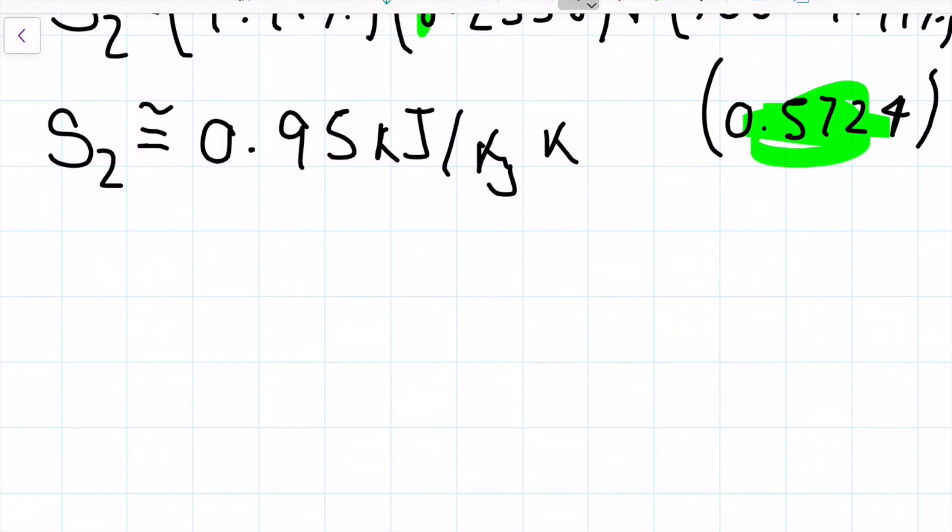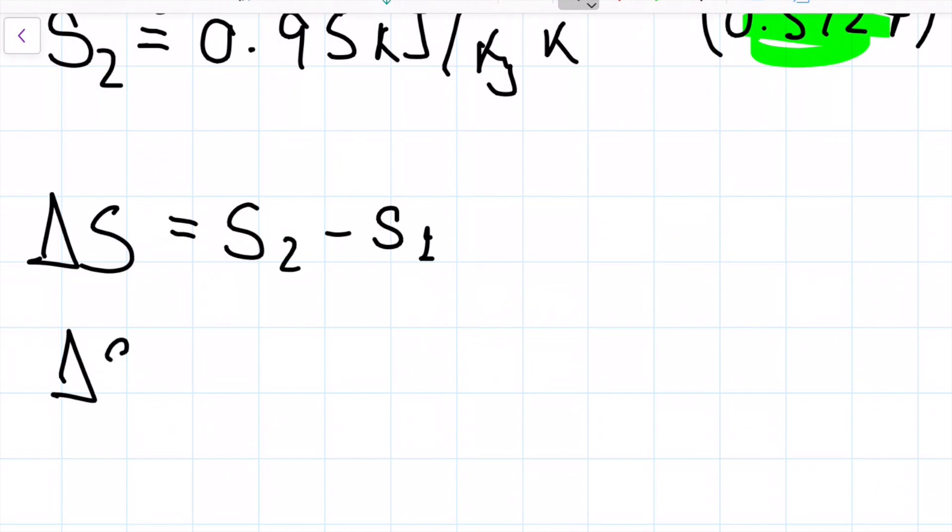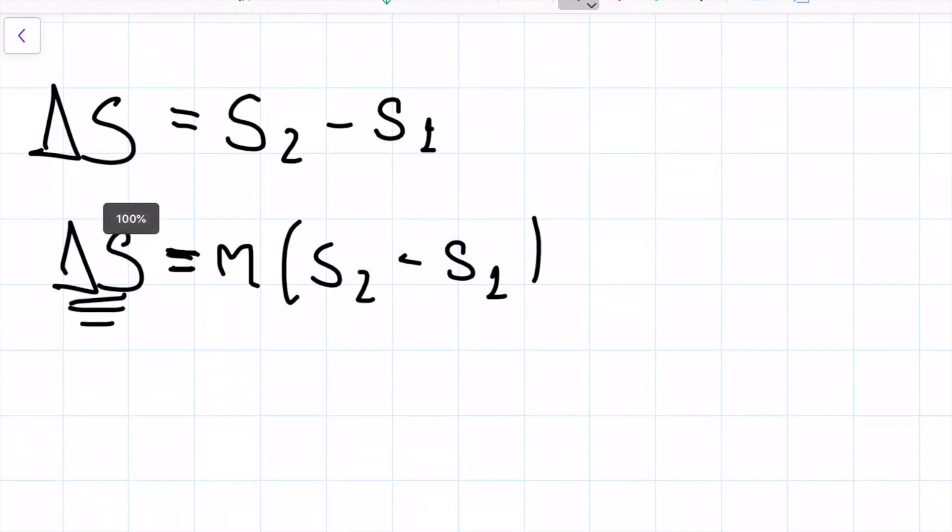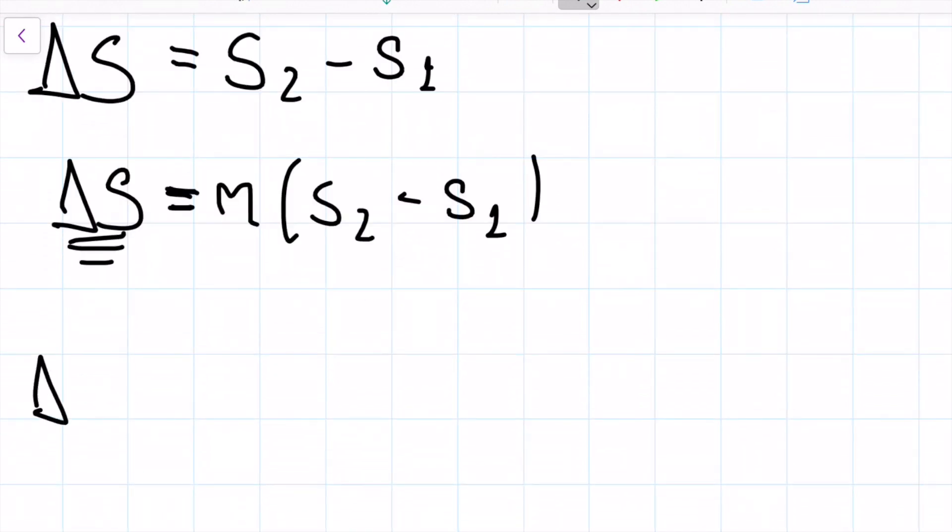Now for the last part, we are looking for our difference in entropy, and we could go ahead and find a small one which is just going to be our end state minus our initial state. But since we know that we're after the big S or entropy without being specific to a certain amount of mass, we can go ahead and say that's going to be the mass times S2 minus S1, because we know the mass is the same for both.